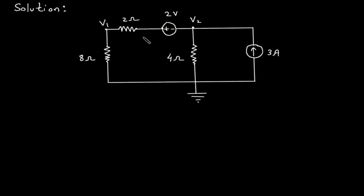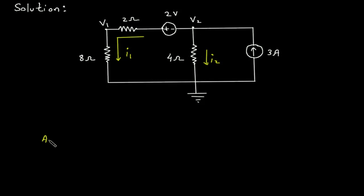Let's assume the direction of current. Let's say this is current I1, and this is current I2. Now we will apply KCL at node V2.